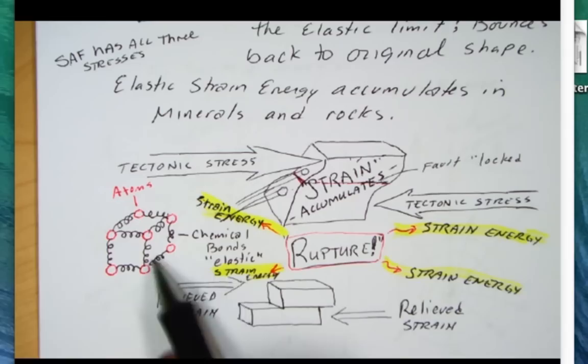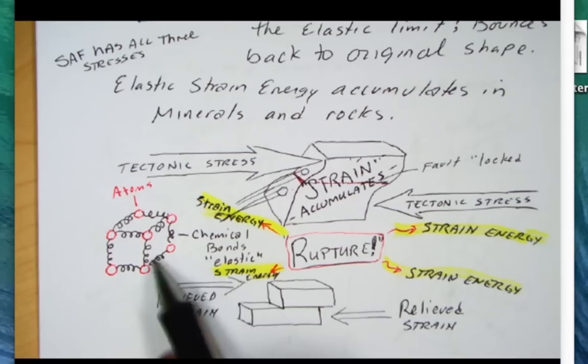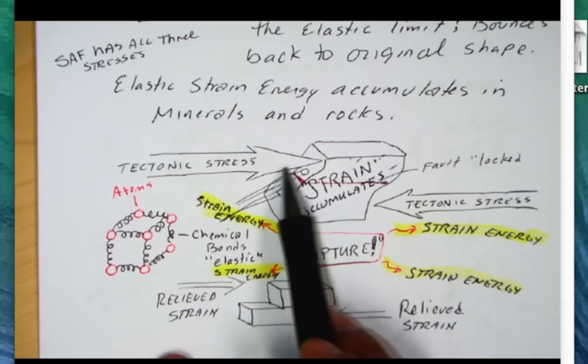Think about the molecular bonds between atoms and minerals as being elastic. They can bend, they can twist, they can torque, you can pull it apart, you can twist it. These chemical bonds are elastic.